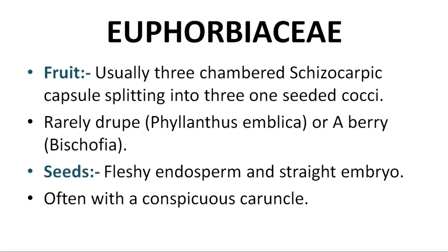Fruit is a schizocarpic capsule — it is a dry fruit. When mature it divides to give single-seeded indehiscent mericarps. It is a many-seeded dry fruit that develops from a compound superior ovary opening in various ways to allow the seeds to escape. It splits into 3 one-seeded cocci. Rarely a drupe or berry.